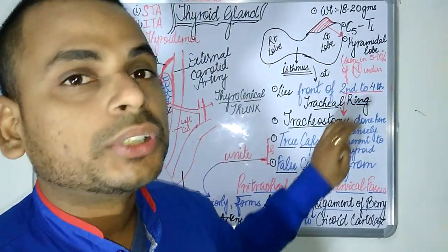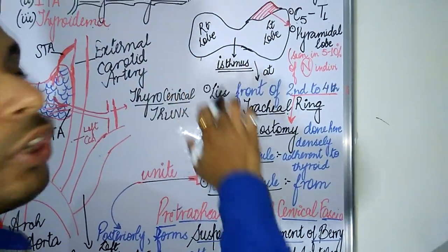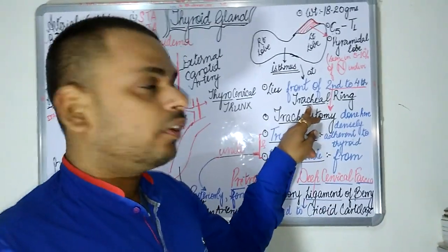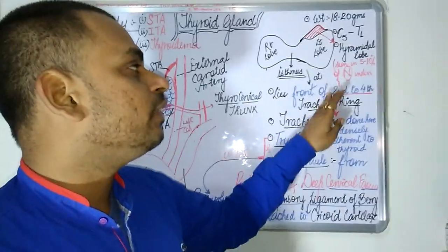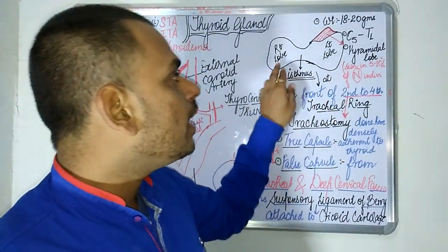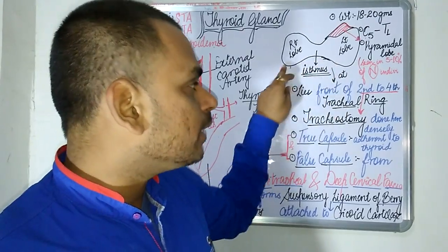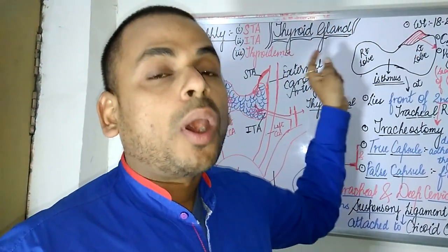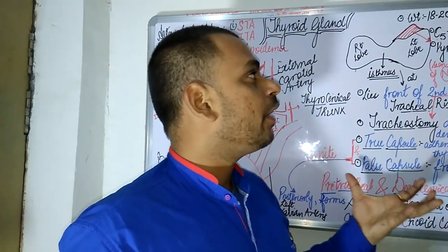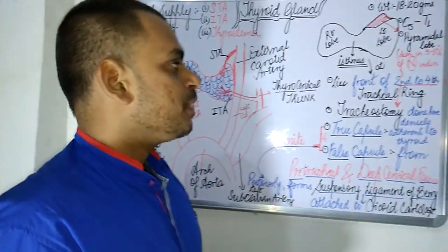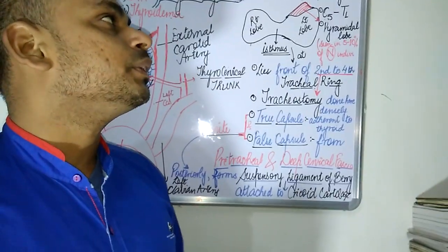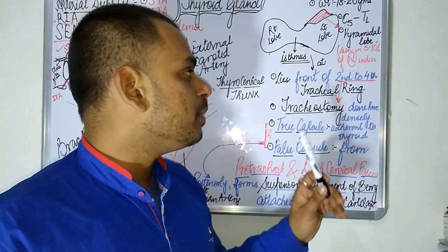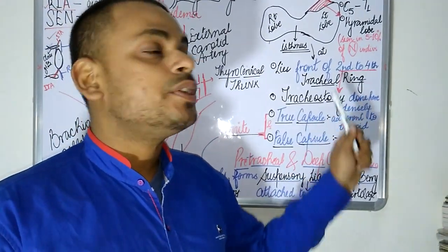The isthmus lies at the level of the second to fourth tracheal ring, in front of the trachea. The lower extent of the lobe can extend up to the sixth tracheal ring, and the upper extent of the lobe can go up to the oblique ridge of the thyroid cartilage. Tracheostomy procedures are carried out at the level of the second to fourth tracheal ring.